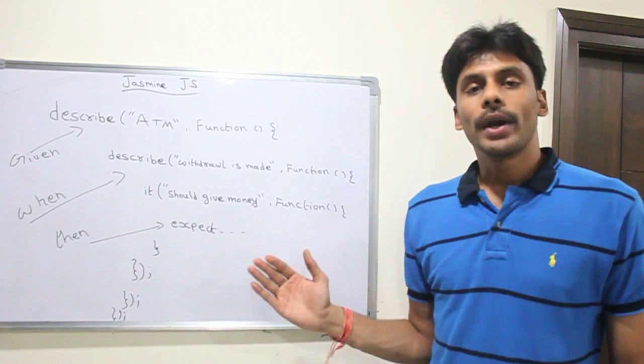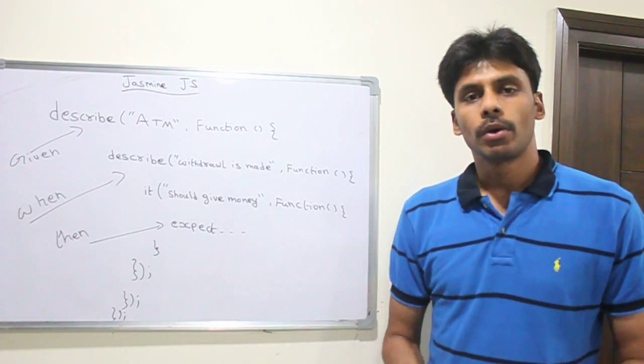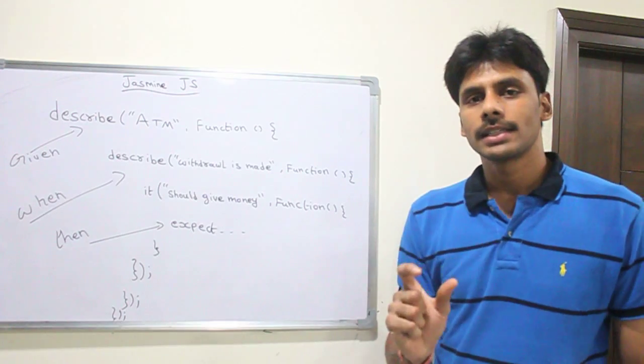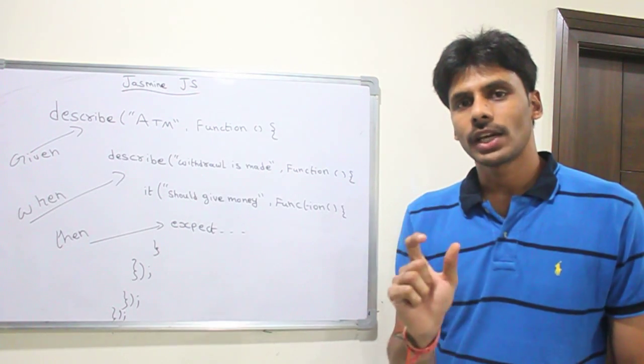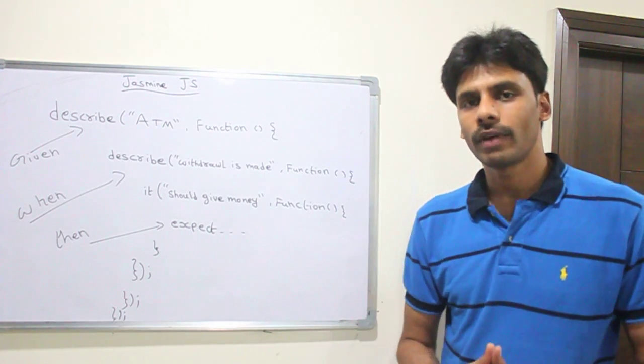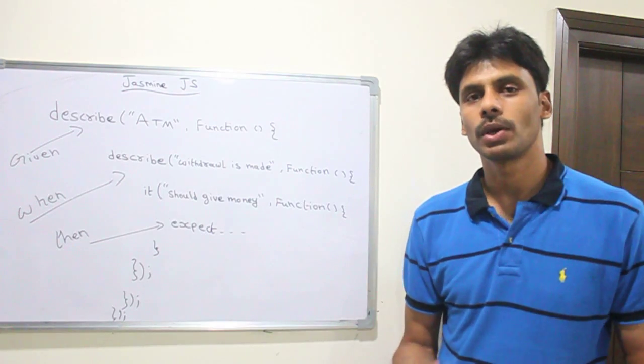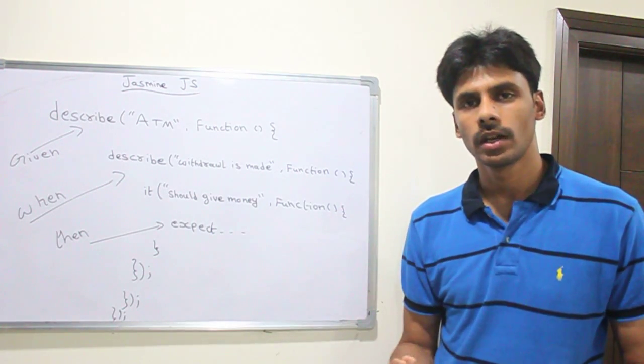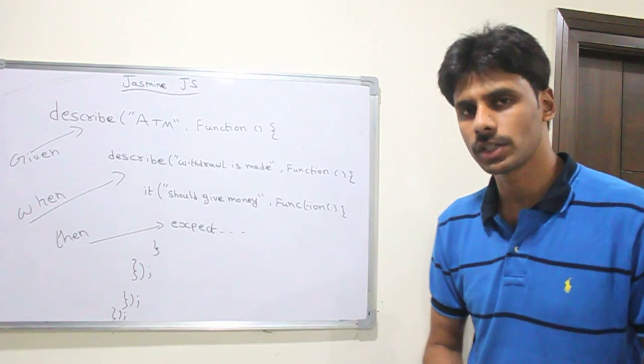Once you start downloading Jasmine and try out a few examples, once I do my hands on, I will show you how to do that. You will realize that at the end of each test, you will have something called spec. The name of the file will be spec because you're directly linking up the acceptance criteria to your tests. So that acceptance criteria is nothing but requirements or specifications.